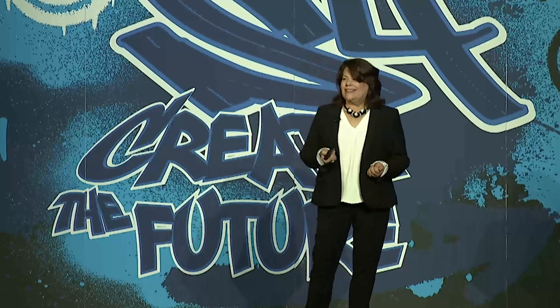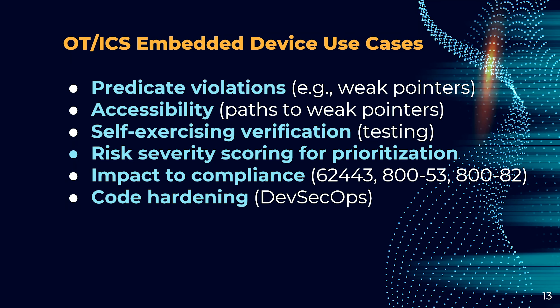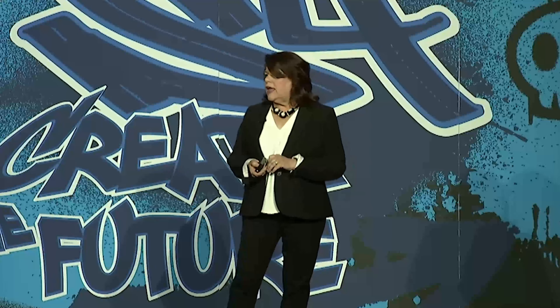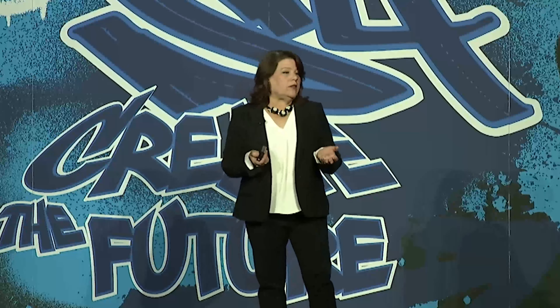Last but not least are the code hardening capabilities. If you're able to find the weak pointers, the paths to those weak pointers, and the potential zero-days, you can hand that over to your DevSecOps team for hardening. If you're working with a COTS device, that information would be communicated with your manufacturer — you don't want to do hardening without talking to them, as it could void your warranty. But sometimes you have an end-of-life or legacy asset where the manufacturer may not even exist anymore. I worked with a coffee roaster using equipment over 30 years old; they had to manage it purely from the firmware image perspective.